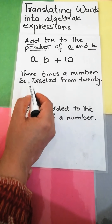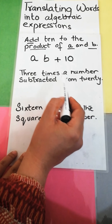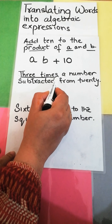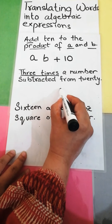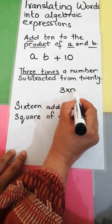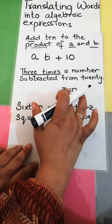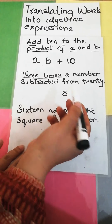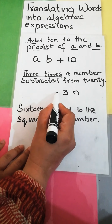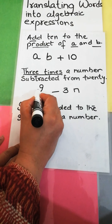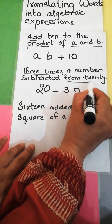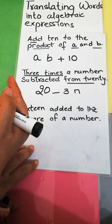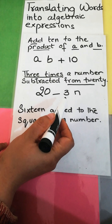Three times a number subtracted from twenty. 'Three times a number' means multiply: 3n. This is then subtracted from twenty, so it is written as 20 − 3n. You really have to read and understand the word statement thoroughly before writing it as an algebraic expression.